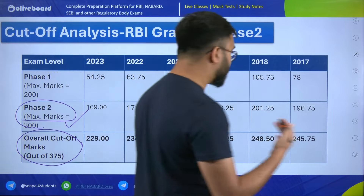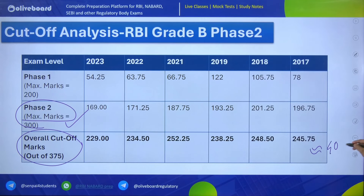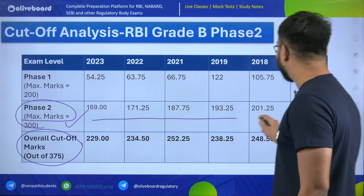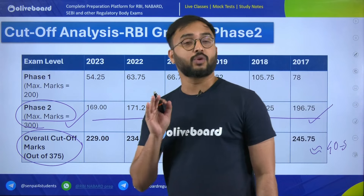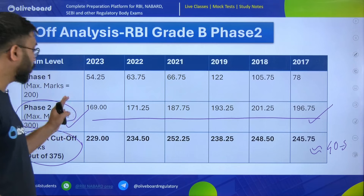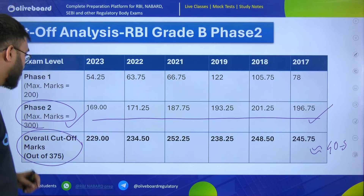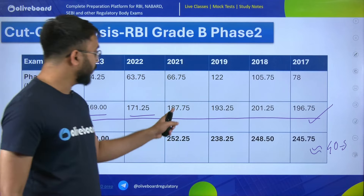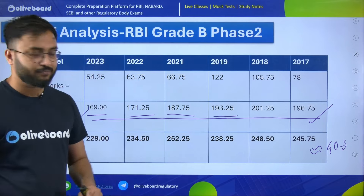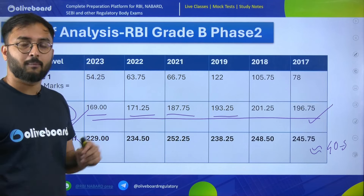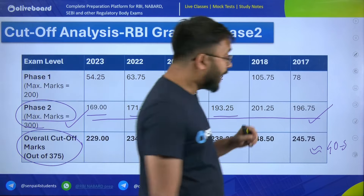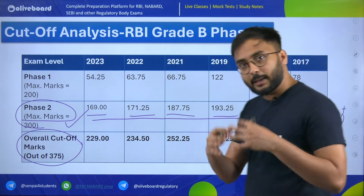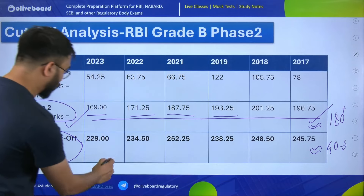We already know that average marks scored in interview are 40 to 50. Now if you are going to get an average score in interview of 40 to 50, we should all know what our target mark should be for the phase 2 exam only. When looking at the overall cutoffs for only phase 2 exam, out of 300: in 2023 it was 169, in 2022 it was 171, in 2021 it was 187, and in 2019 it was 193.